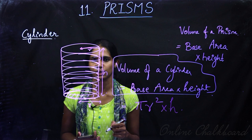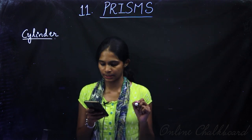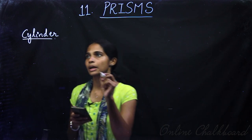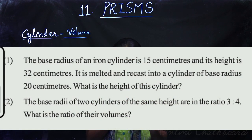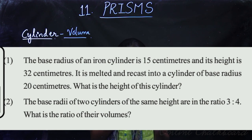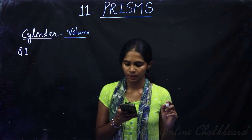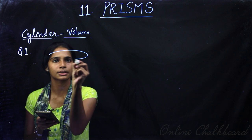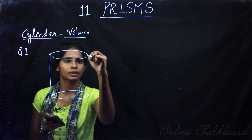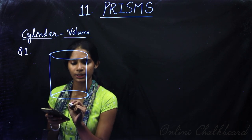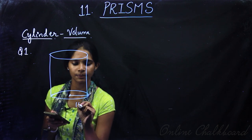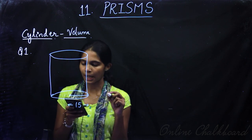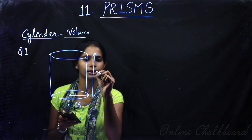Now we have exercise questions from page number 176. Question number 1: The base radius of an iron cylinder is 15 cm and its height is 32 cm. It is melted and recast into a cylinder of base radius 20 cm. What is the height of this new cylinder?